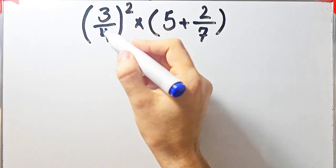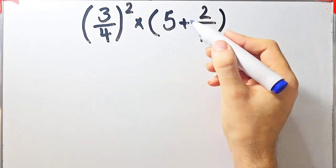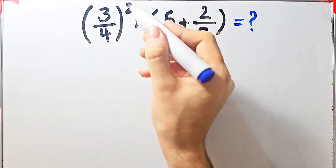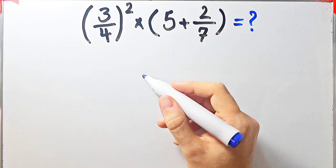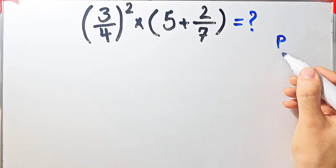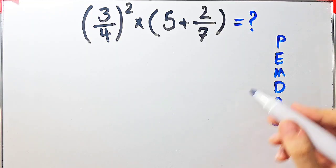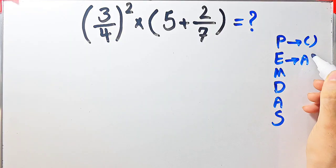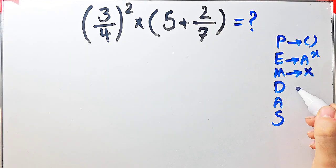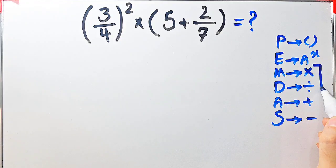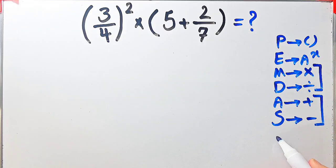Let's solve another question about the PEMDAS rule: 3 over 4, all to the power of 2, then times open parenthesis 5 plus 2 over 7 close parenthesis. In this question we have exponent, multiplication, parentheses, and addition. We follow PEMDAS: P for parentheses, E for exponent, M for multiplication, D for division, A for addition, S for subtraction. Multiplication and division share the same priority level, as do addition and subtraction — when both appear, we go left to right.